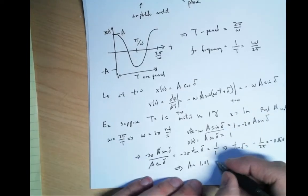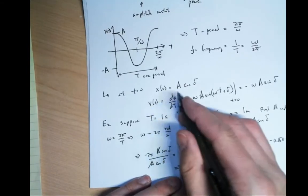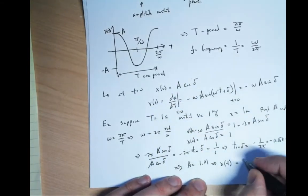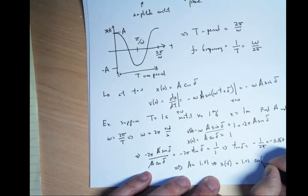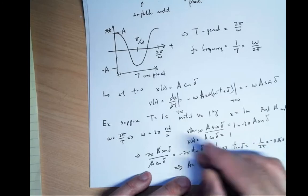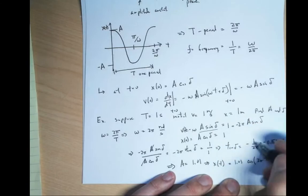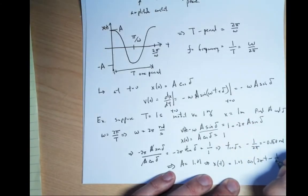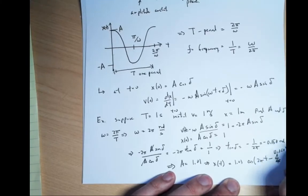Plugging delta back in gives A equals 1.01. So the amplitude is 1.01 and the phase is minus 0.158 radians. Therefore, x of t equals 1.01 cosine(2 pi t minus 0.158 radians).